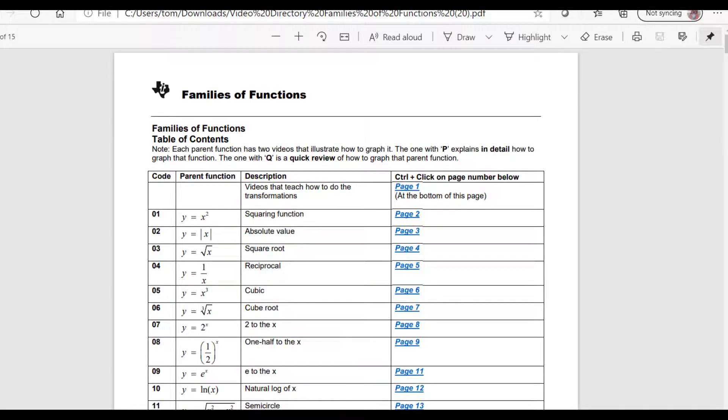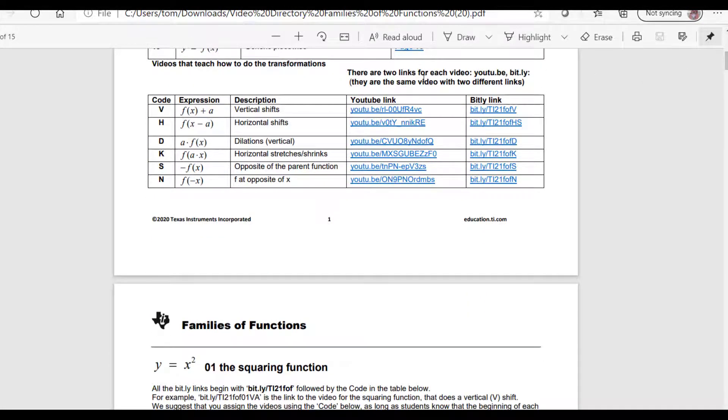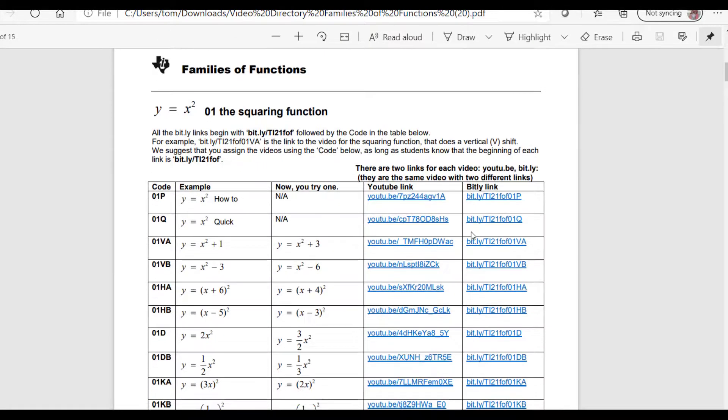It begins with a table of contents of the 13 families. And then it has a list of the transformations in general. And each family has the parent function, the quick and so on.